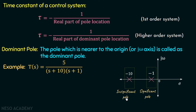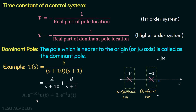But why is one pole insignificant and the other significant? Let's understand this by taking the partial fraction of this transfer function. We will have A/(s+10) + B/(s+1) for some values of A and B. Taking the inverse Laplace transform, we get A·e^(-10t)·u(t) + B·e^(-t)·u(t).